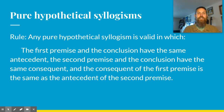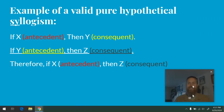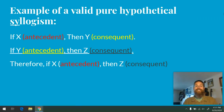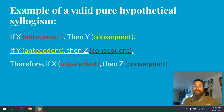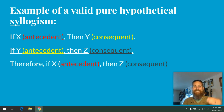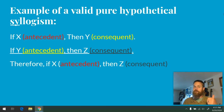Let me show you a chart that will make it easier to understand — we may need to review the terms antecedent and consequent. The antecedent comes first; the consequent comes second. So: if X (antecedent) then Y (consequent); if Y (antecedent) then Z (consequent); therefore, if X (antecedent) then Z (consequent). The antecedent of the first premise must be the antecedent of the conclusion — if it's not, throw it out, it's invalid.